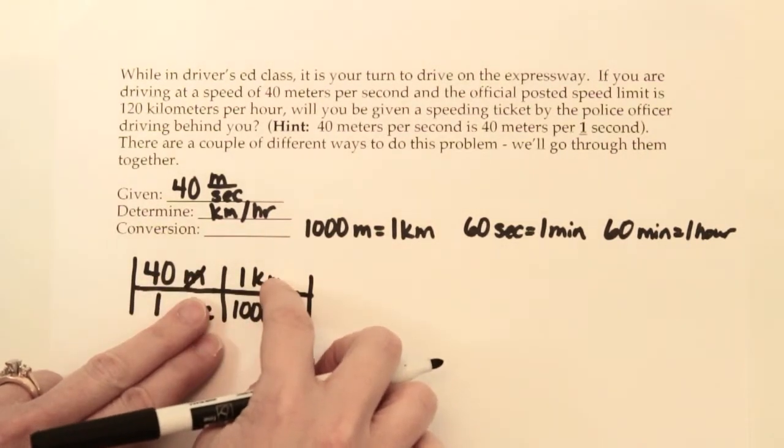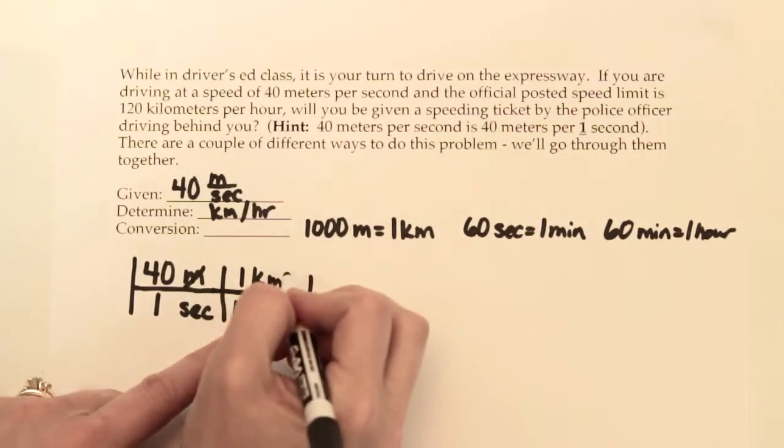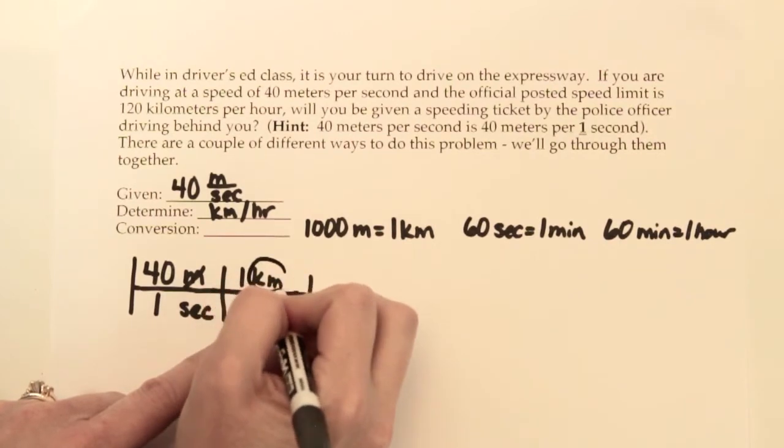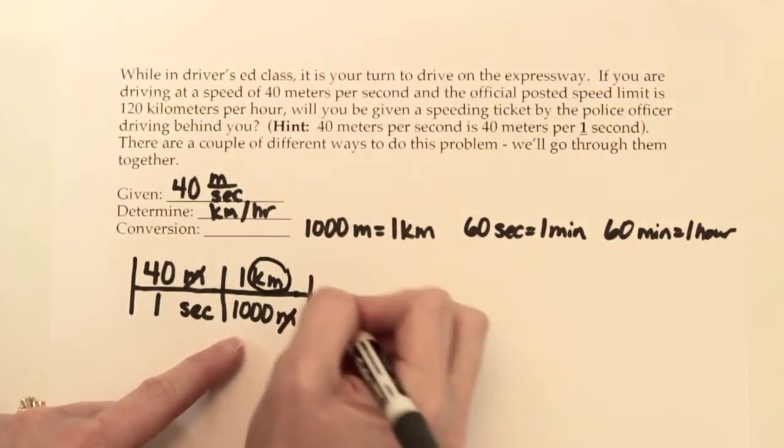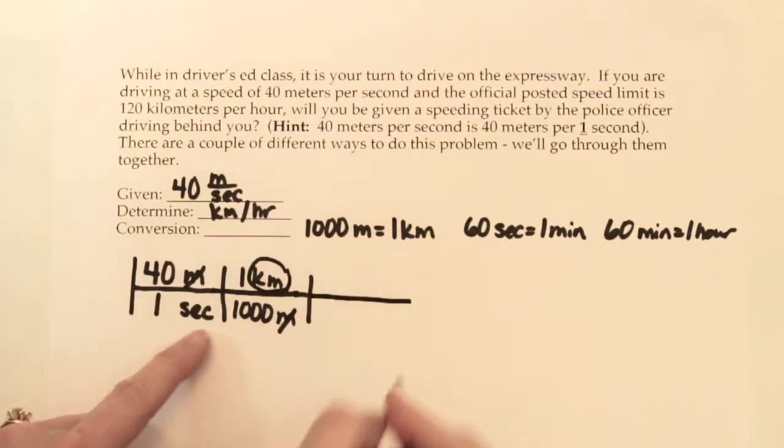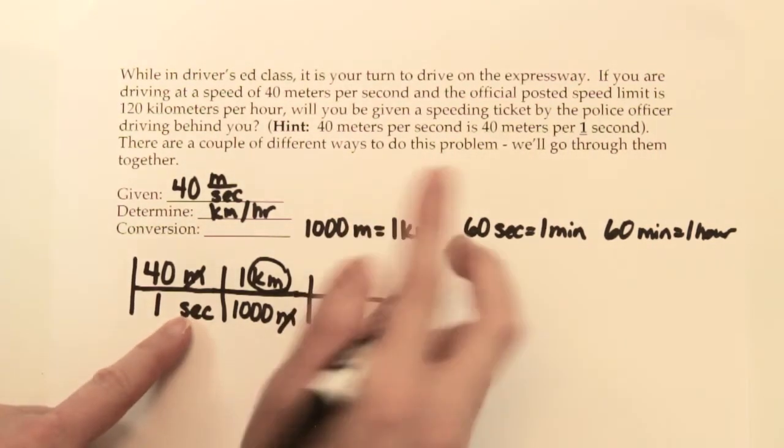Now we're just at kilometers per second, but we want to get kilometers per hour. So I have the kilometers part of my kilometers per hour, so that's looking good. Now I just need to get my seconds into hours. This time, since I want my seconds to cancel out and go away, and my seconds are already on the bottom, I need some seconds on the top to cancel out with these.